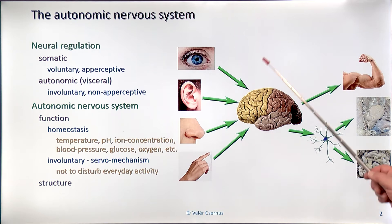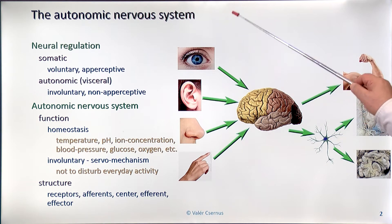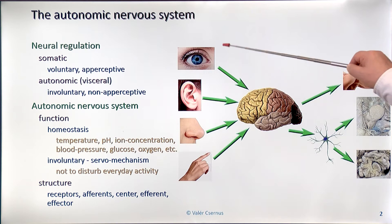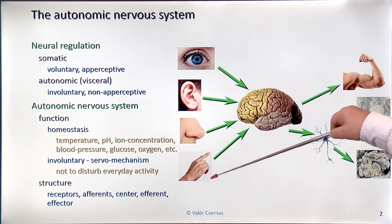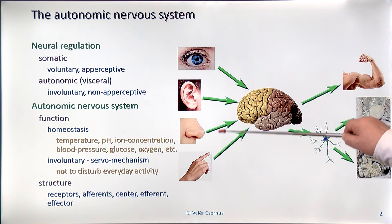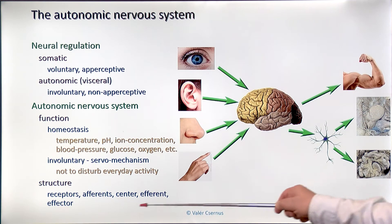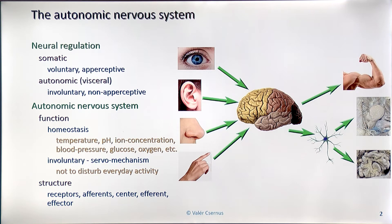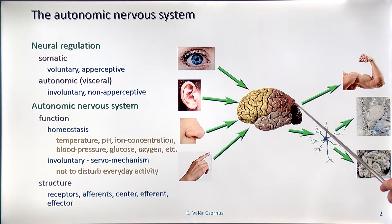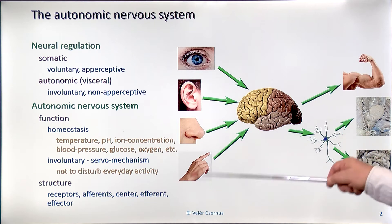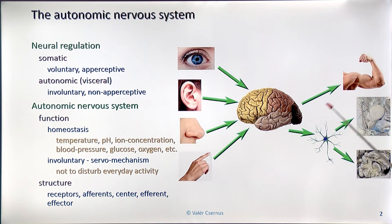The structure is very similar to the somatic system. We have five levels: receptors, which pick up information from the internal environment; afferent pathways, which carry this information into the center; a center where we process this information and decide how to react; efferent pathways, which carry out the information; and effectors — target organs.